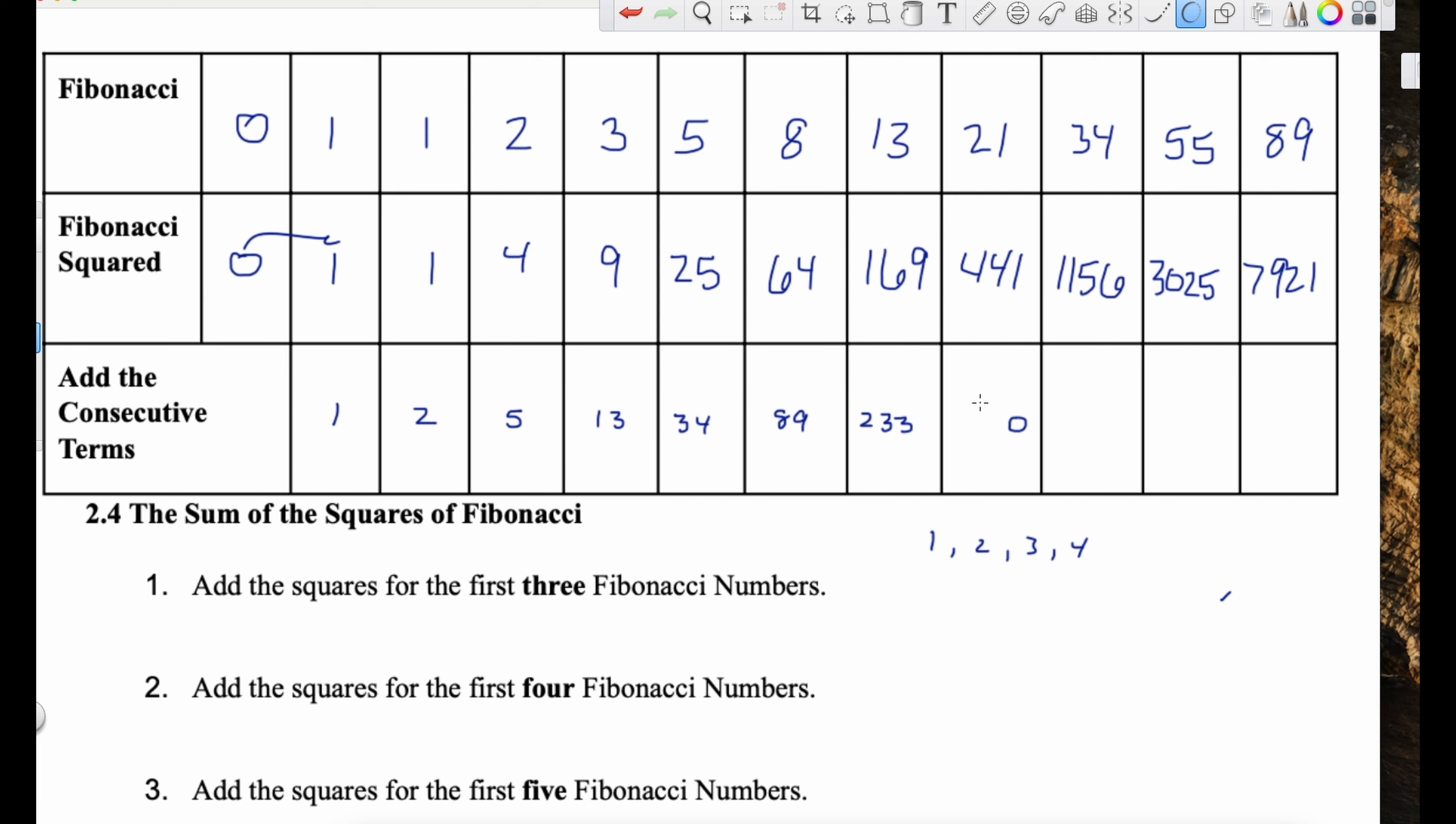And then the next one would be 233. So we're actually going to skip over 144 and we will hit 233. I mean, it's just an interesting characteristic of this sequence. That's, this is all we're really seeing here. It's just an interesting pattern.